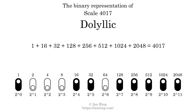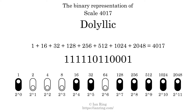The scale number not only enumerates the scale with a unique index, but it also literally describes the tonal content of the scale. Represented as a binary number in base 2, the scale number is 1, 1, 1, 1, 1, 1, 0, 1, 1, 0, 1, 1, 0, 0, 0, 1.